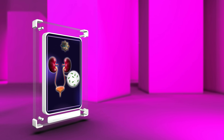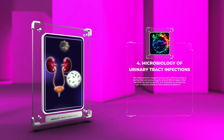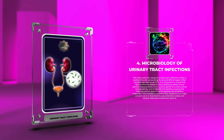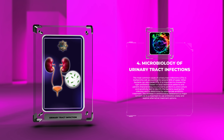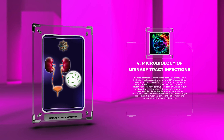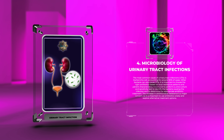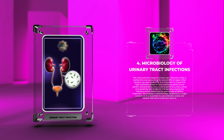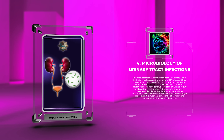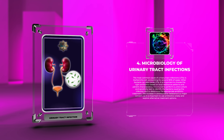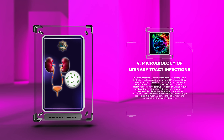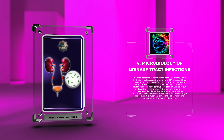The most common cause of urinary tract infections is Escherichia coli, accounting for around 80% of cases. Other bacteria can also cause UTIs. It is important to choose the right antibiotics based on local resistance patterns and patient characteristics. It is crucial to perform a urine culture and sensitivity test to identify the bacteria and determine the appropriate antibiotic treatment. The increase in antimicrobial resistance is a major concern, so it is important to use antibiotics wisely and explore alternative treatment options.